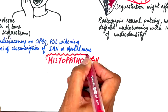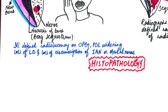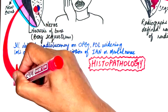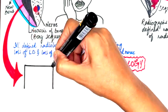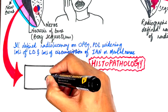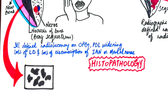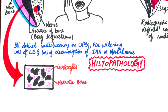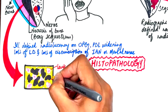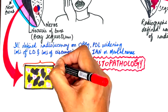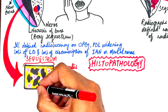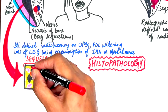Biopsy in acute osteomyelitis is rare due to the infection's liquid nature and lack of soft tissue involvement. When performed on a bony sequestrum, the sample consists mainly of necrotic bone with loss of osteocytes, peripheral resorption, and bacterial colonization. The bone's periphery and Haversian canals contain necrotic debris and an acute inflammatory infiltrate of polymorphonuclear leukocytes. The sample is often diagnosed as sequestrum unless clinical and pathologic evidence suggests acute osteomyelitis.